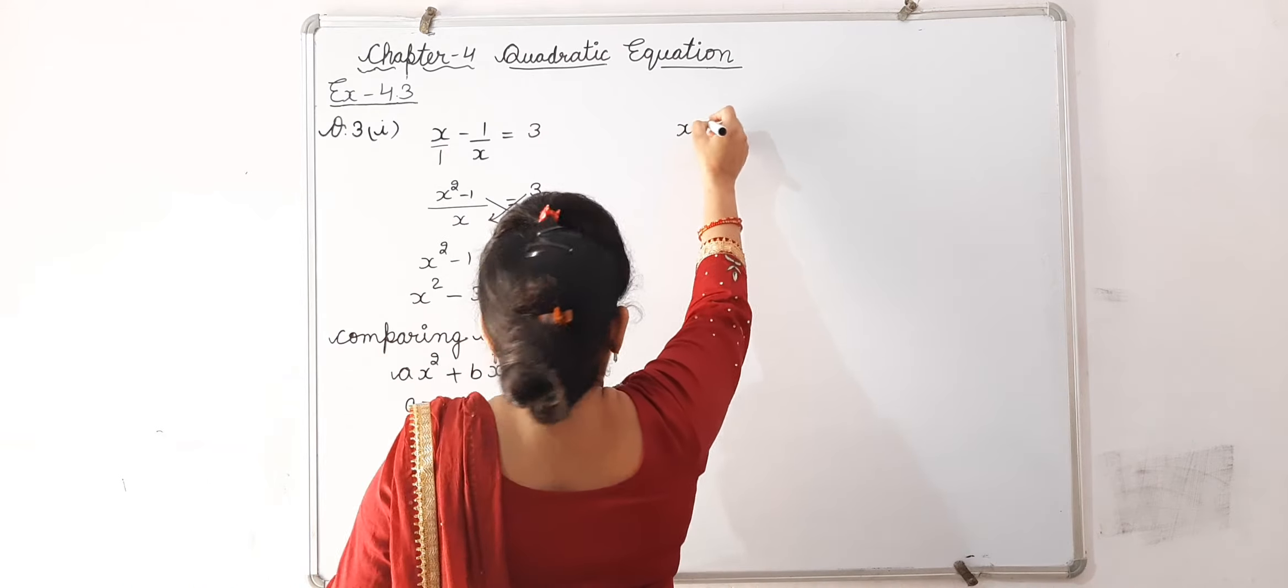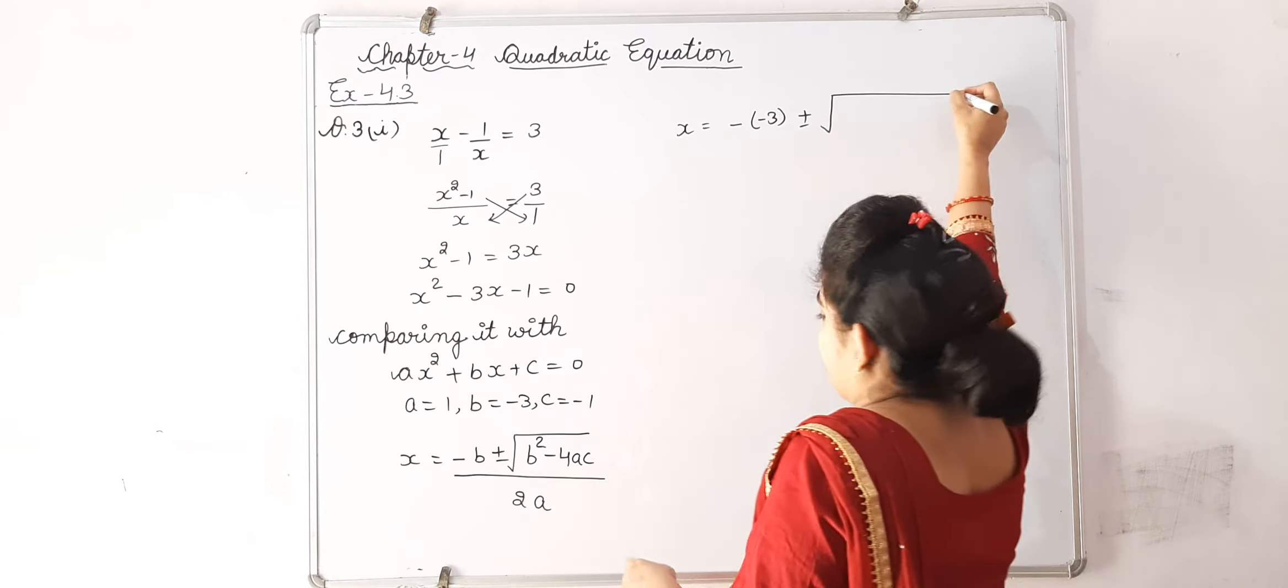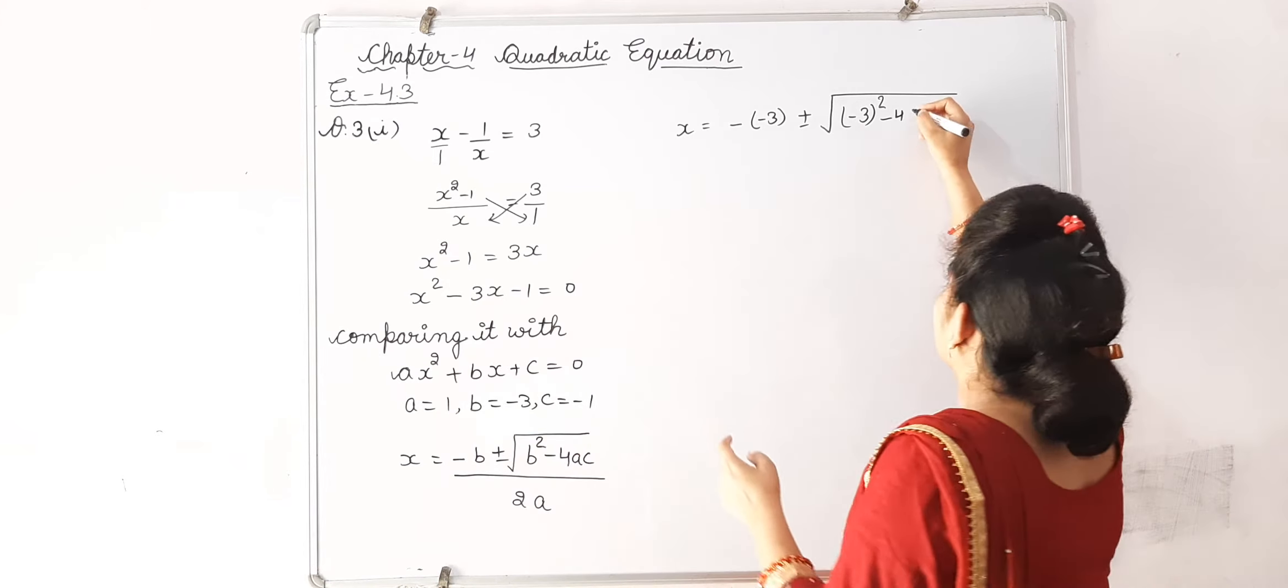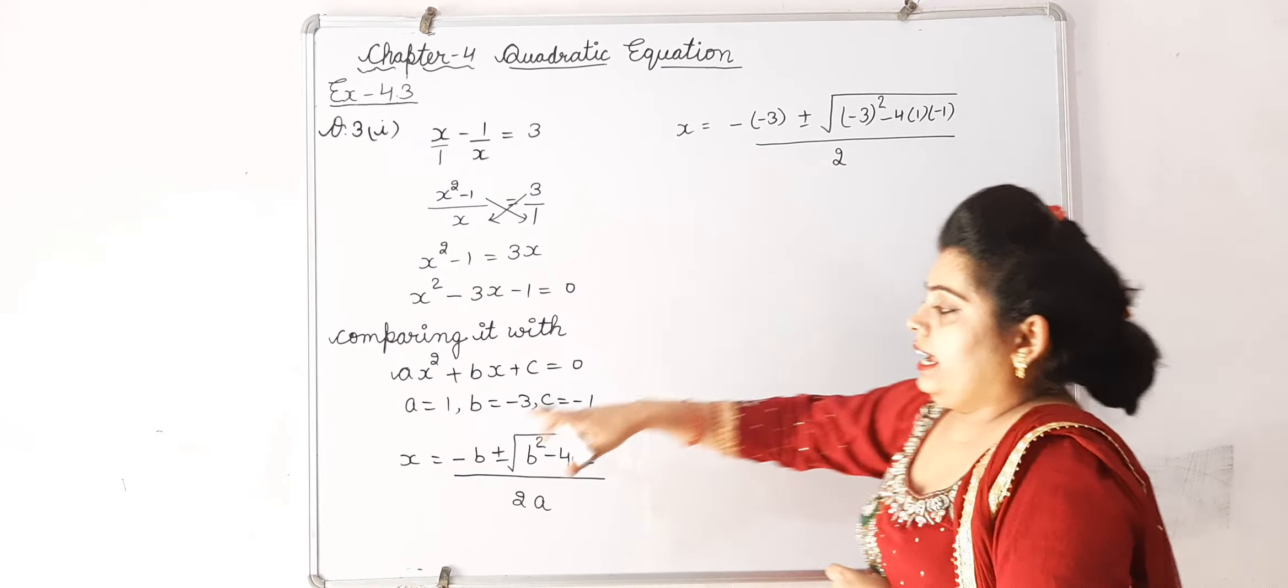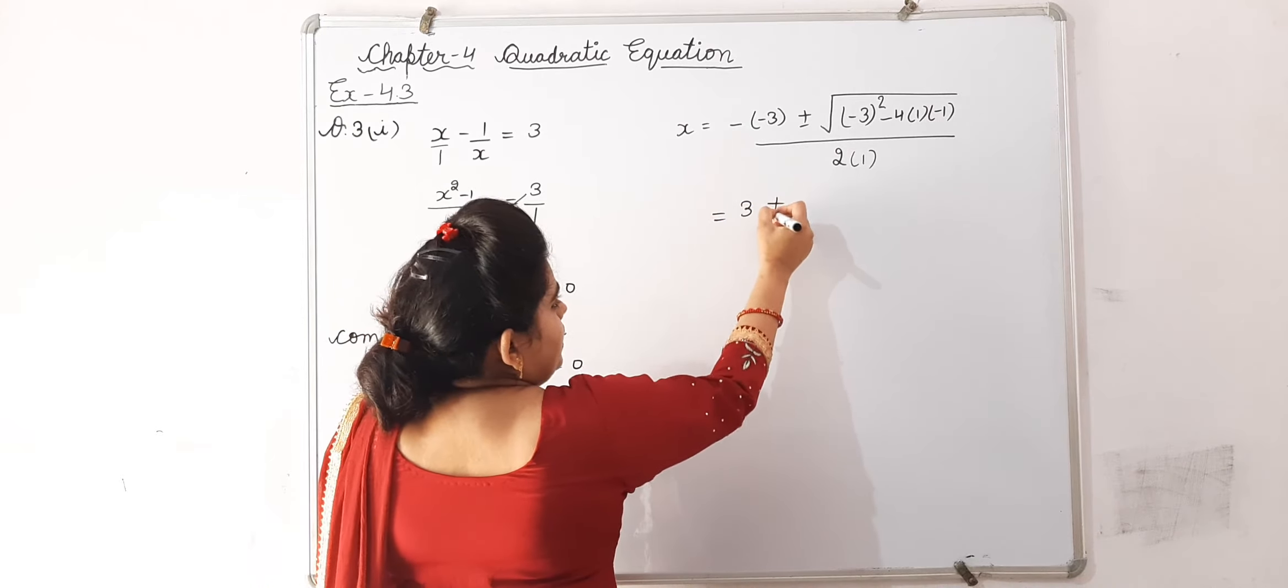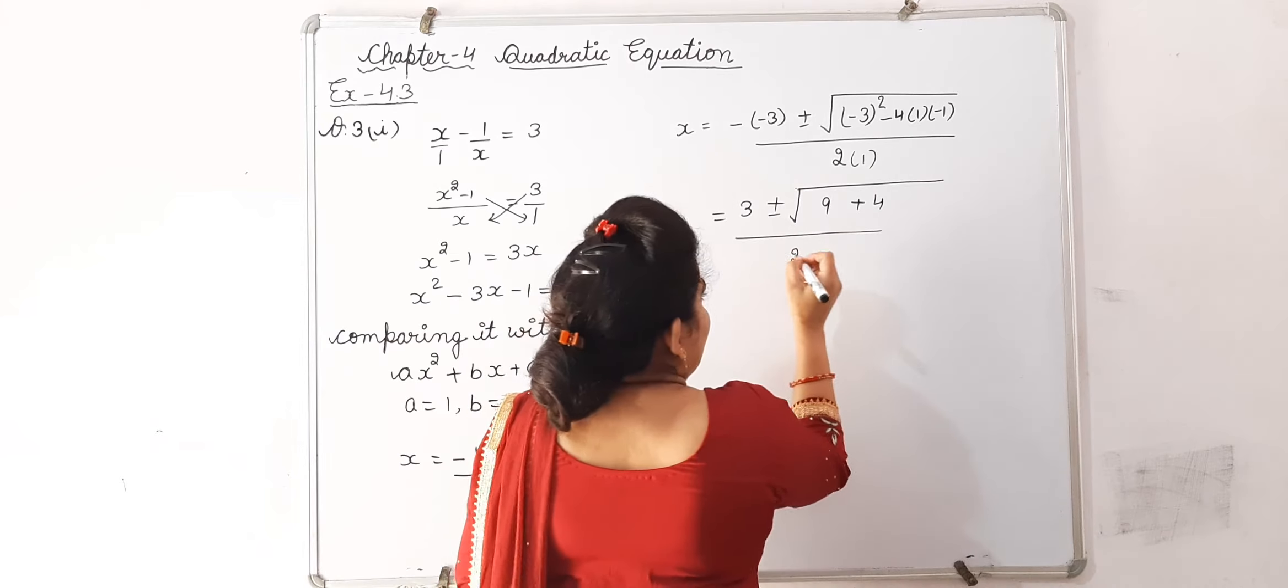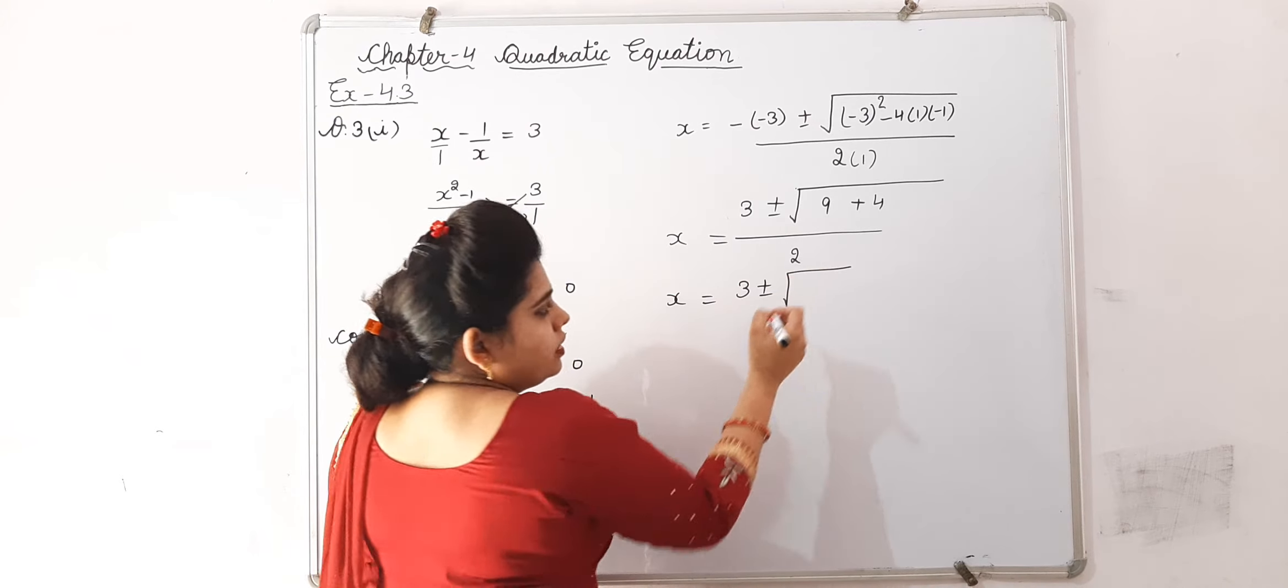Now, put these values: x is equal to minus of b, b is minus 3, plus minus square root of b square means minus 3 whole square minus 4 into a, a means 1, c means minus 1. Now, minus of minus is plus, so 3 plus minus square root of 3 square, 9, plus 4, that's 13, divided by 2.